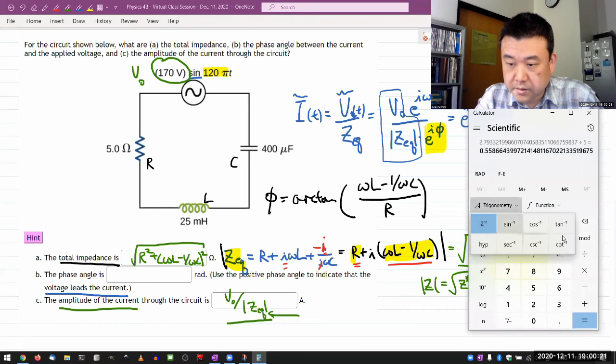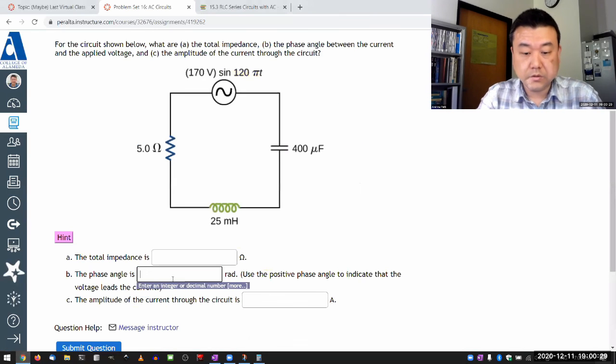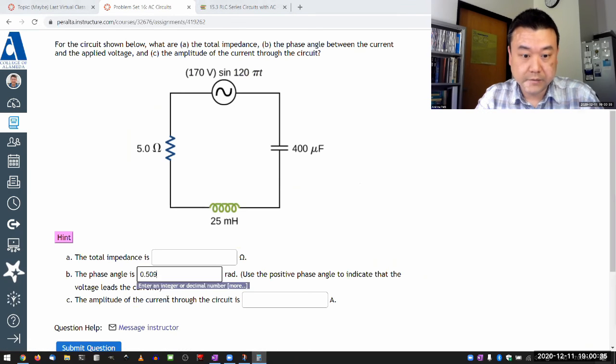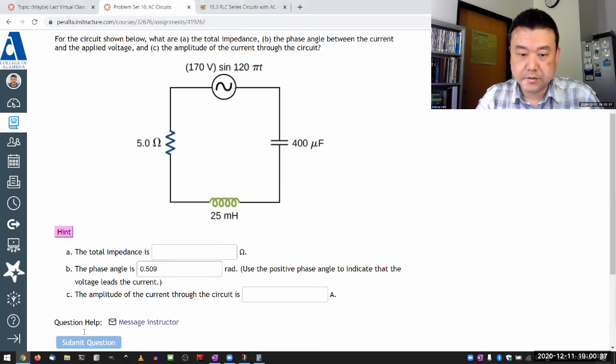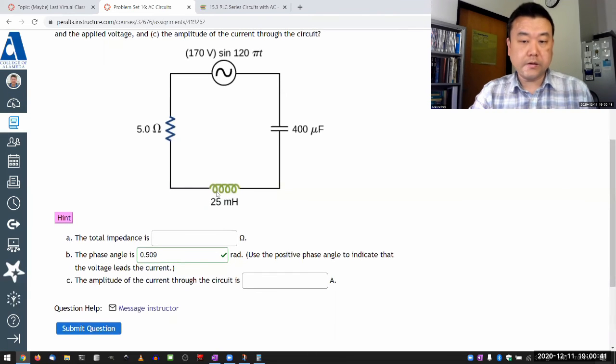And let me put this through arc tangent and my answer is going to be in radians. Okay. So we're going to second arc tangent. So 0.509 or so. Let me plug that in to see. 0.509, I think that was. And it should be positive because the inductive reactance won over the capacitive reactance.